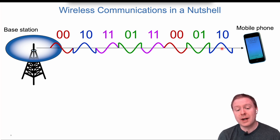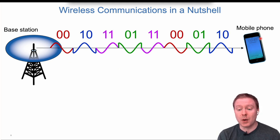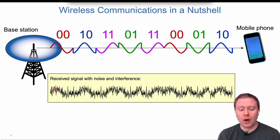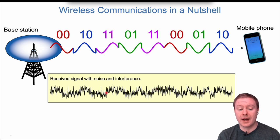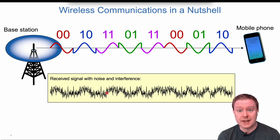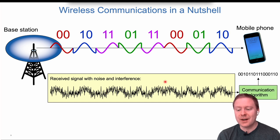Of course, radio waves don't have a color, and they don't look that nice when reaching the mobile phone. We expect to see something with the same kind of shape, but with noise and interference on top of it, and the signal is attenuated immensely between the transmitter and the receiver.